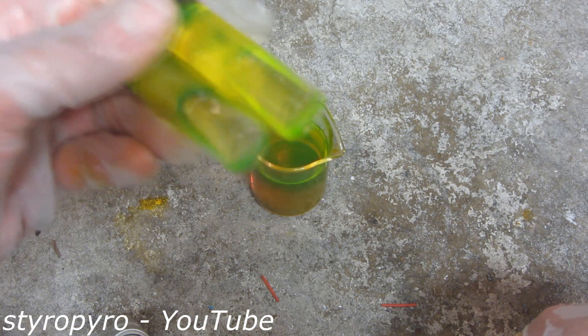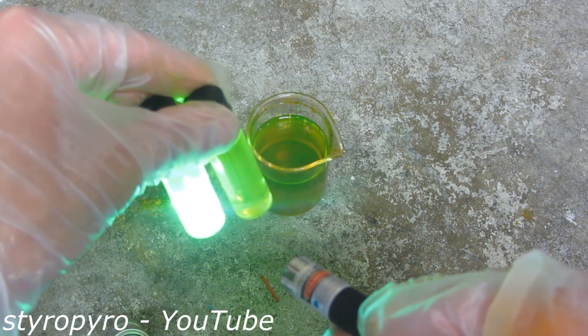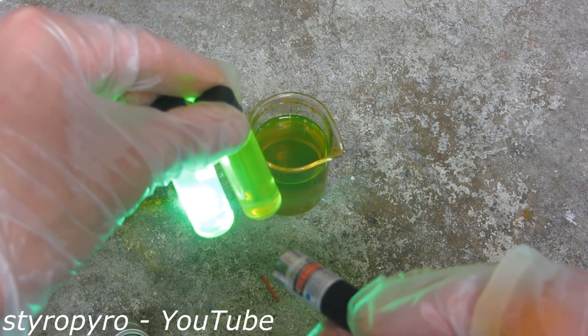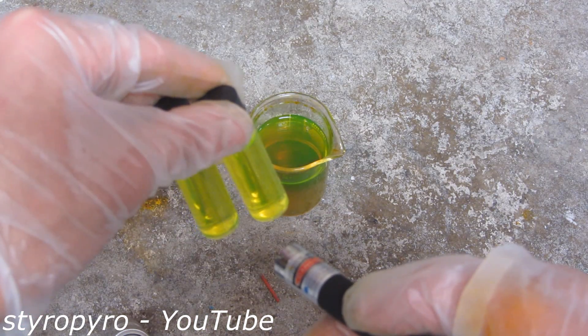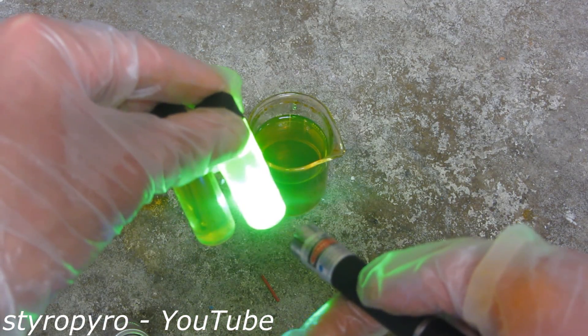So under normal lighting you can barely tell the difference between the two. But when you hit them with the laser, you notice that the one on the left is slightly bluer than the one on the right. And because it's slightly bluer, it's also slightly dimmer to the human eye. So obviously I want to use the one on the right here.